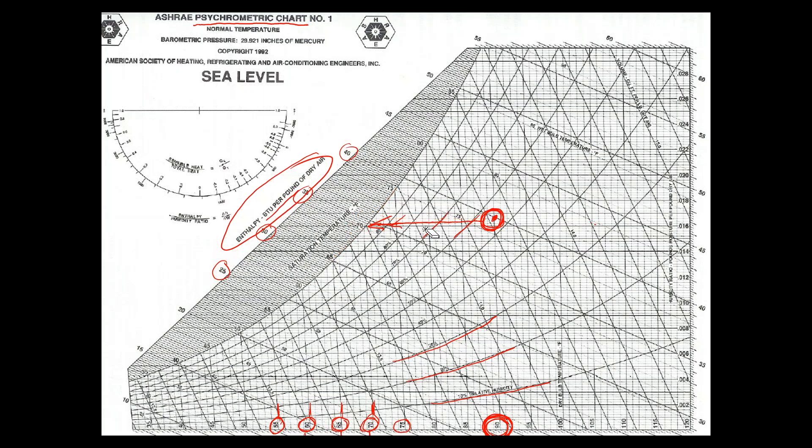Now, another interesting thing, I mentioned that we would focus on the enthalpy. Okay? So, let's take a look at what the enthalpy of this original air was. The enthalpy, you go this direction. Okay? And this is going to tell you the total energy content of that air. In this case, it's about 40 BTUs per pound of dry air.